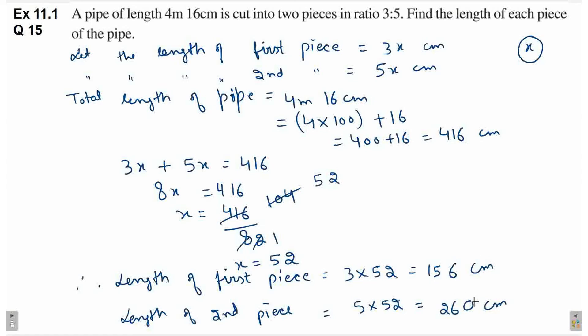So, aap in dono numbers ko aise bhi chhod sakte houn yaa phir aap in ko kaise lih sakte houn. 156 centimeter is equal to 1 meter and 56 centimeter. 260 centimeter is equal to 2 meter 60 centimeter.